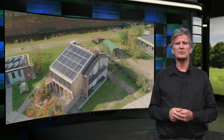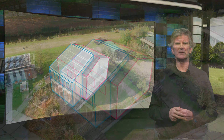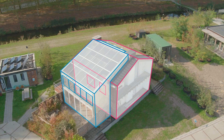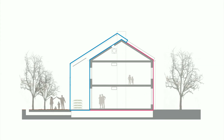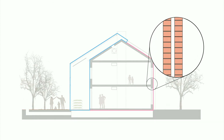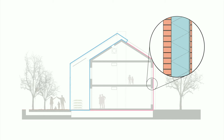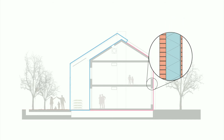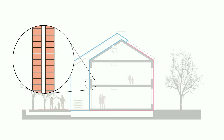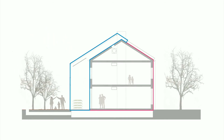Here we will show you how thermal insulation is applied in the Pret-de-Loger house. On the north facade, insulation is applied to the outside of the existing wall. The original outer masonry slab is removed, and a 200 mm thick insulation layer is applied, covered with thin brick tiles. On the south side, the cavity in the existing brick wall is injected with loose fill insulation material. This performs less than the exterior insulation on the north side, but the greenhouse on this side also helps to reduce the transmission losses.